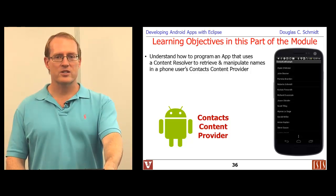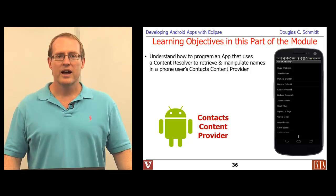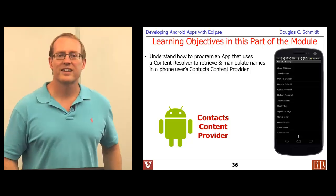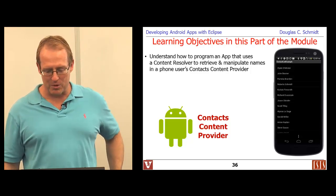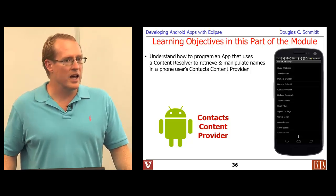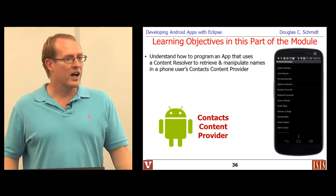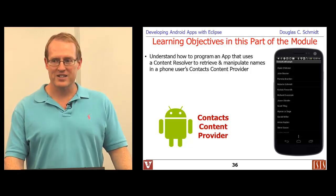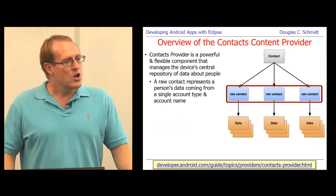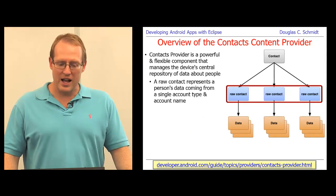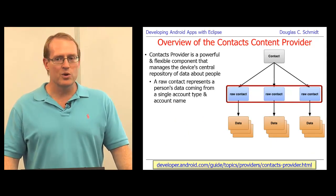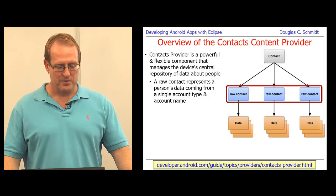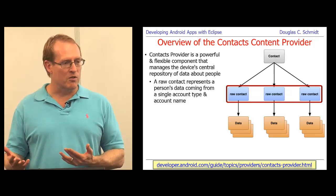To make this discussion as concrete as possible, we're going to work through a simple example that accesses elements of your contacts database on the phone. This example will basically dump out the contents of your contacts — in this case, just the names, though you could have it dump other things as well. The content provider for contacts, called the contacts provider, gives you a way to do a whole bunch of different things with information about your friends and family stored on your Android device.